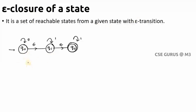We need to find the ε-closure of each state one by one. For ε-closure of Q0: first, include Q0 itself — you always include the state itself first. Then, from Q0 I can reach Q1 with epsilon, so Q1 is included. From Q1 I can reach Q2 with epsilon, so I also write Q1 to Q2 epsilon.